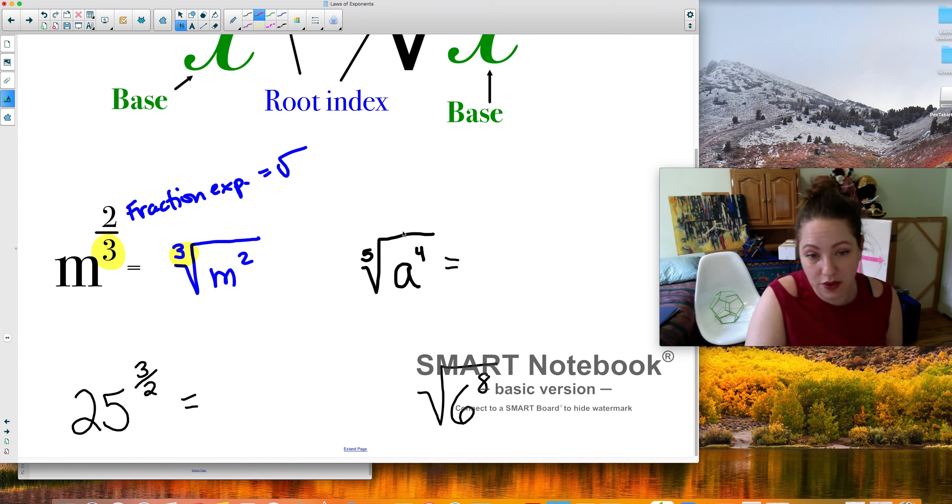So here, this is a root, which means it becomes a fractional exponent. The exponent stays on top. So the 4 is the exponent. The root, 5, goes on bottom. That's how you rewrite it. Let's do two more.